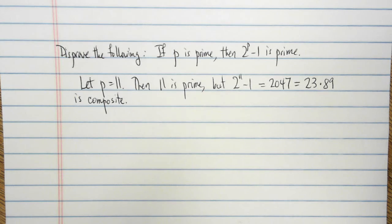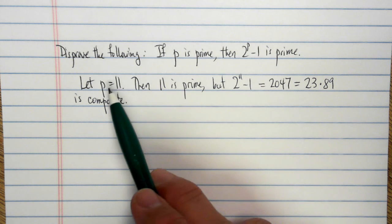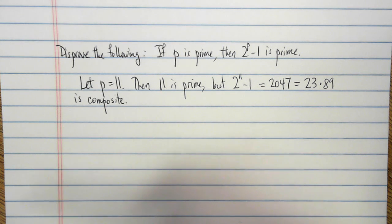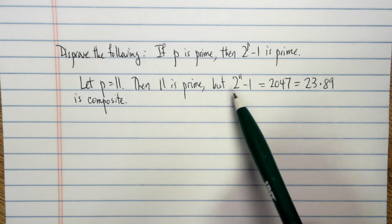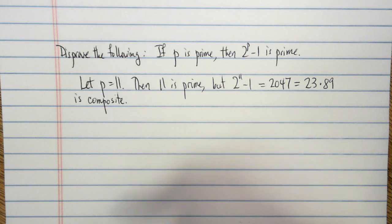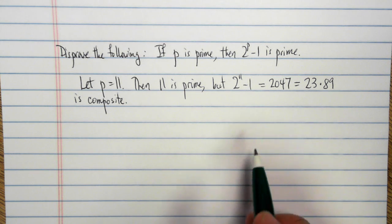And it actually took a little bit of effort to actually establish that there is a prime number, so that the factorization does not work. Or so that the number here, 2 to the P minus 1, does have a non-trivial factorization.